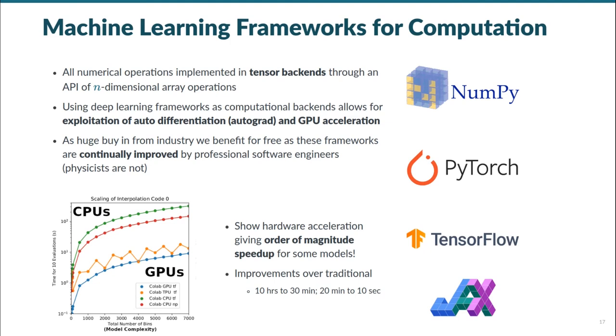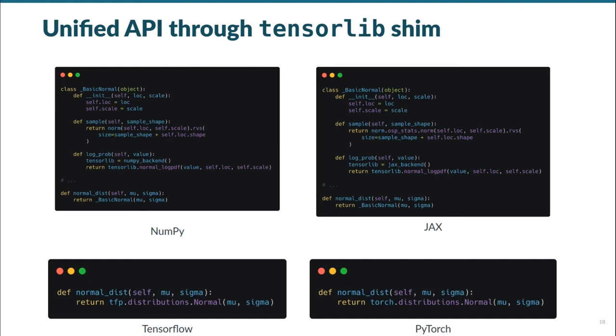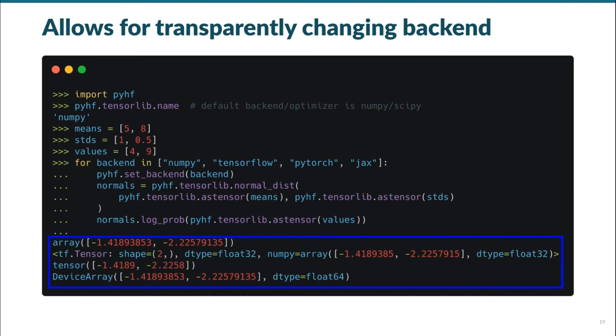Additionally, while we like to think good things about ourselves, physicists are not professional software engineers, nor the incredible NumPy and SciPy dev teams. We're physicists. So being able to build on top of the hard work of the professionals that build these open source libraries is hugely empowering. What PyHF provides is a unified API to our computational backends through our TensorFlow shim. You can see here for our four supported backends, the code needed for PyHF to provide a normal distribution object through our TensorFlow normal dist API, without the analyst ever needing to care which backend they've chosen to use. This additionally allows for transparently changing the backend with our set backend API.